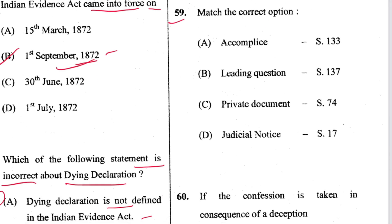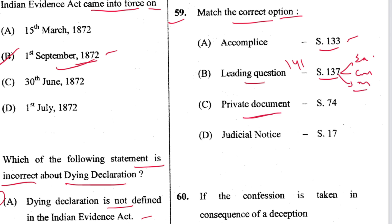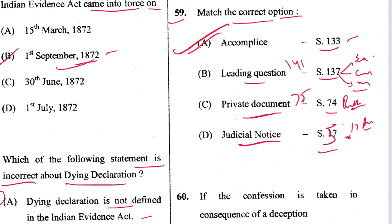Question 59: Match the correct option. Accomplice is in Section 133 — incorrect, it is in Section 141. Section 137 is examination-in-chief, cross-examination, and re-examination. Private document is in Section 75; Section 74 is public document. Judicial notice is in Section 57. Section 17 is admission. Only the accomplice option is correctly matched. A is the answer.